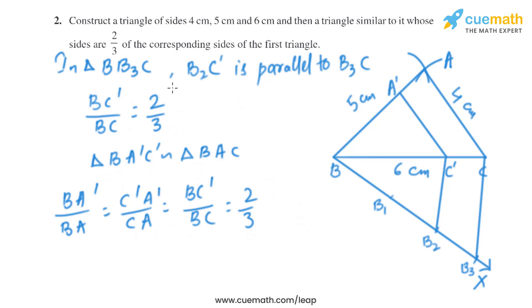Now triangle BA'C' is similar to triangle BAC by the AA similarity criterion, so we can say that BA' by BA equals C'A' by CA equals BC' by BC.